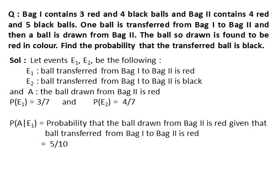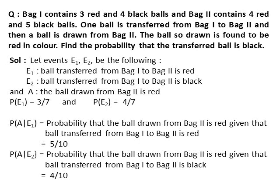P(A|E1) is the probability that the ball drawn from Bag 2 is red, given that the transferred ball was also red. When one red ball is transferred, Bag 2 has 5 red balls out of 10 total, so P(A|E1) = 5/10. P(A|E2) is the probability that the ball drawn from Bag 2 is red, given that the transferred ball was black. When one black ball is transferred, Bag 2 has 4 red balls out of 10 total, so P(A|E2) = 4/10.